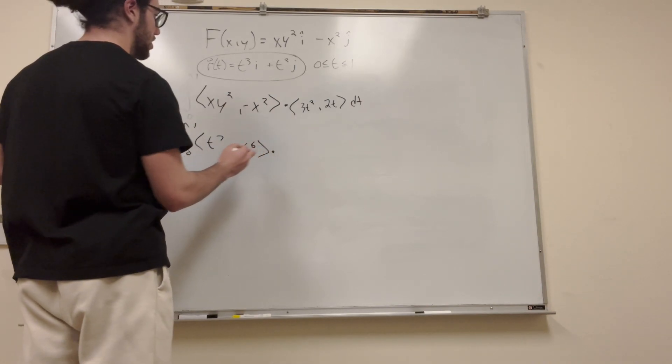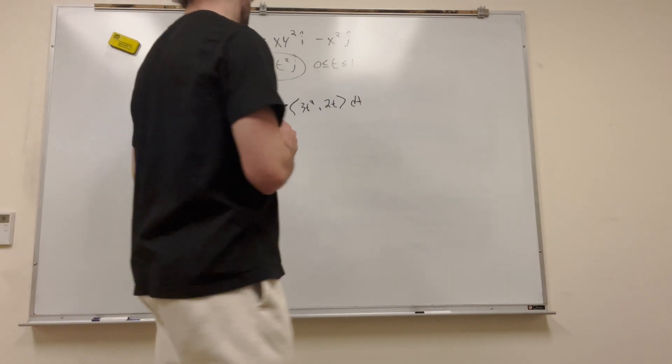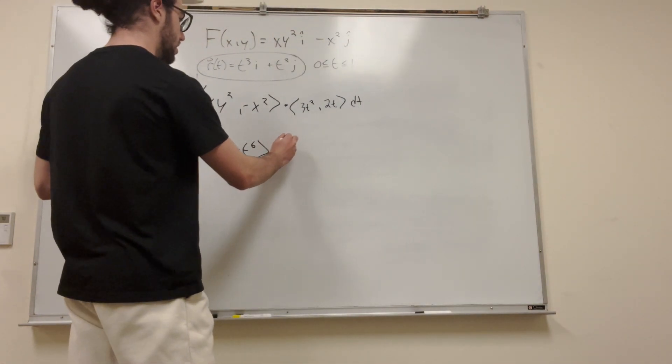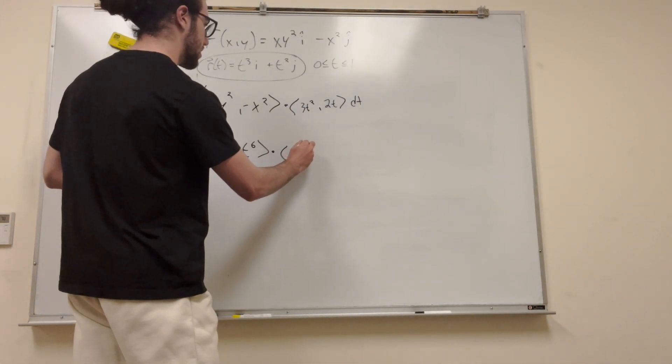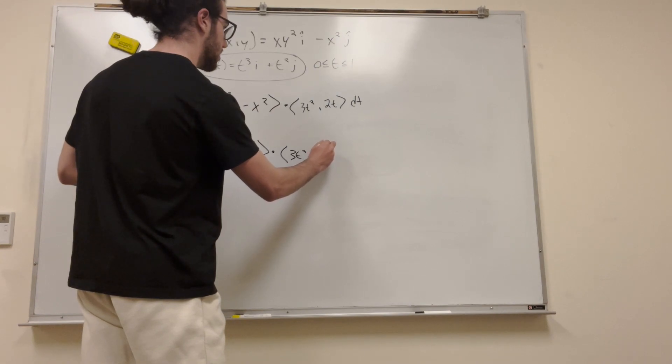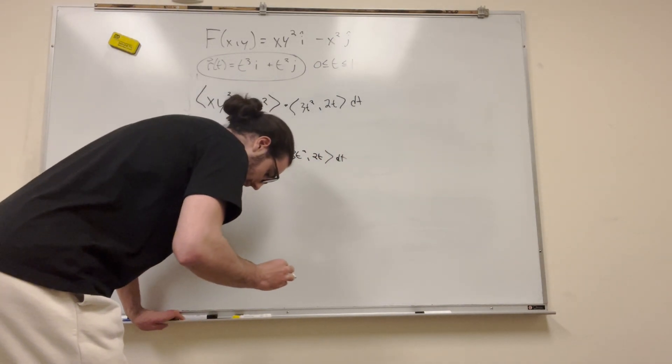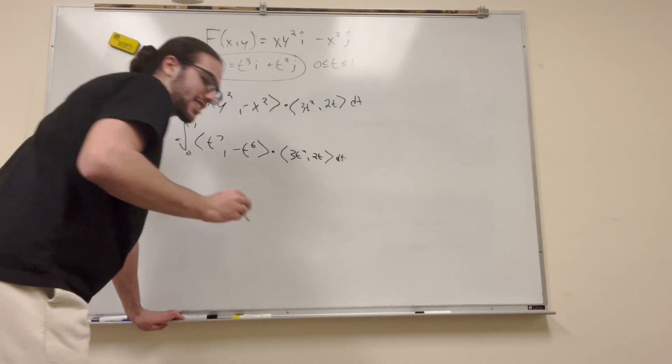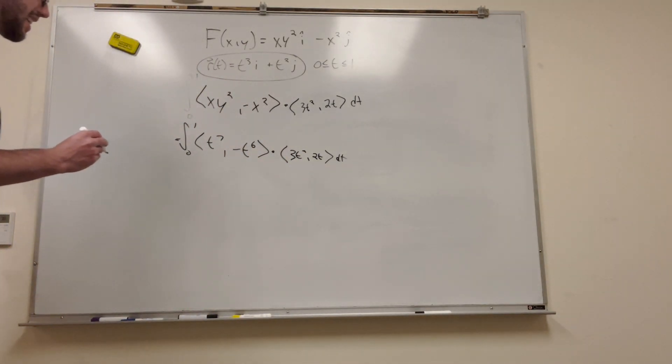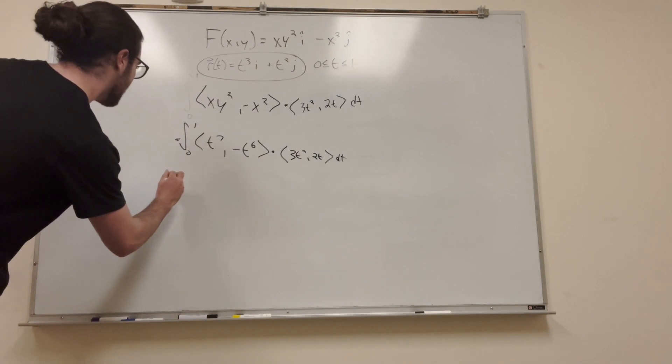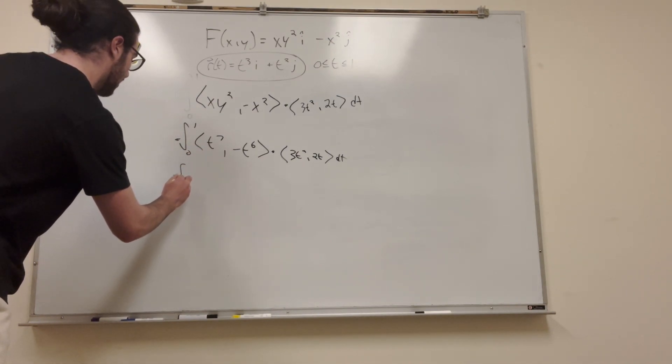And then dot that with, you know, the same thing we got over here, 3t squared, 2t, dt. Alright, now let's evaluate this. Oh, okay. Yeah, I can't squat today. I'm sorry. Long story. Okay, so, same thing, 0 to 1.